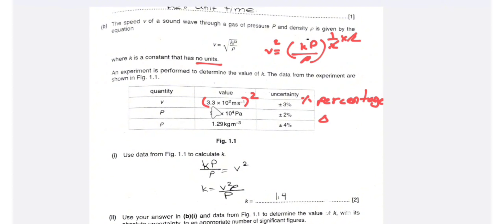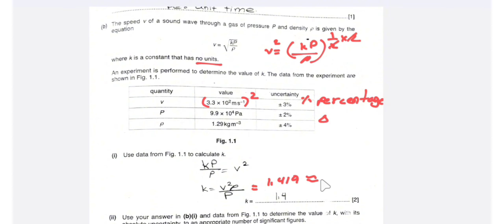So k equals v squared, that is (3.3 × 10²) squared, multiplied by rho which is 1.29, divided by p which is 9.9 × 10⁴. After calculating, we get a value of 1.419, which is approximately 1.4 to two significant figures.